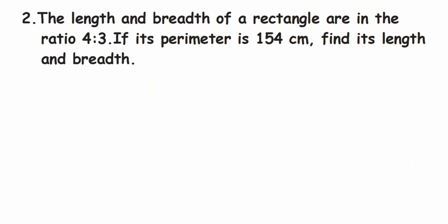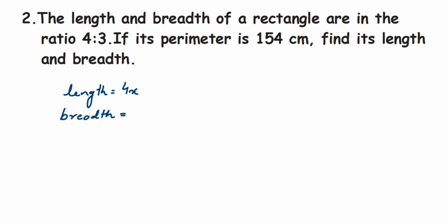Now the second question: the length and breadth of a rectangle are in the ratio 4:3. If its perimeter is 154 centimeters, find its length and breadth. Whenever ratios are given, we assume a variable. So length will be 4x and breadth will be 3x, since ratios are always given in reduced form.